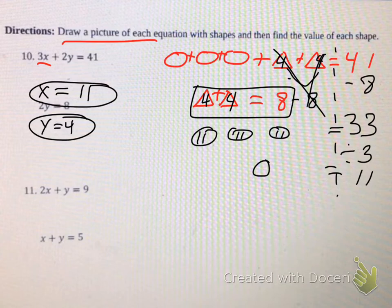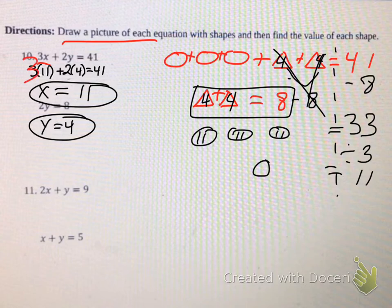Done. Cool. And let's just check our work really quick. Three times eleven plus two times four equals 41. Let's see if that's true. Three times eleven is thirty-three, two times four is eight. Thirty-three plus eight is in fact forty-one. Done. Eleven and four were the correct solutions.